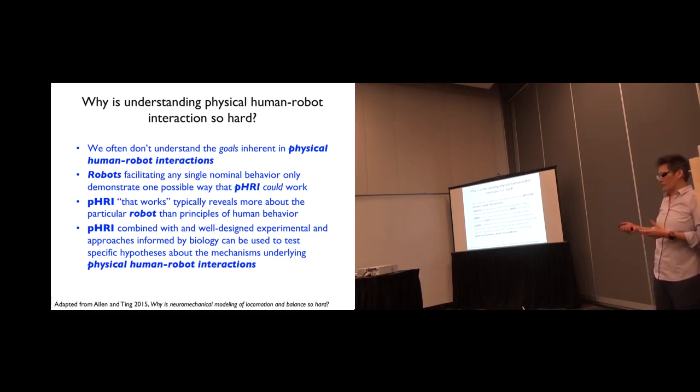And some of the things we've talked about, a lot of it reveals more about what are the constraints and limitations of the robot rather than the person. So I'm just going to advocate thinking a little bit more about designing experiments of humans and robots together to try and test generalizable hypotheses about movement.